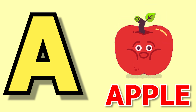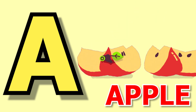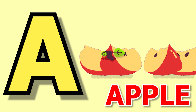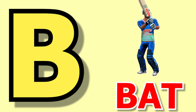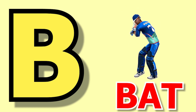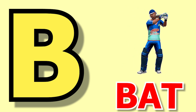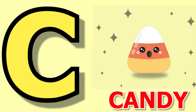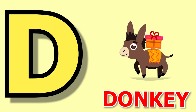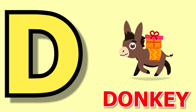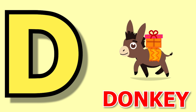A for apple, apple means save. B for bat, bat means balla. C for candy, candy means candy. D for donkey, donkey means gadha.